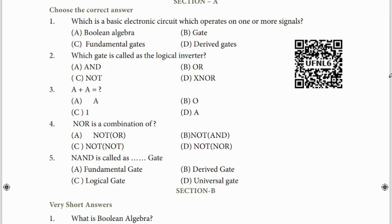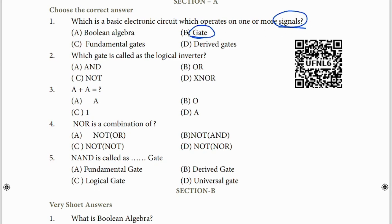First question: Lesson 2, Section E, first question. Clue in the question: 'more signals.' Take the word 'signal' as your clue. You go to your friend's house, gate open pannni, your friend gives a signal - okay? So gate open pannni, friend-ku signal kudukereingge.